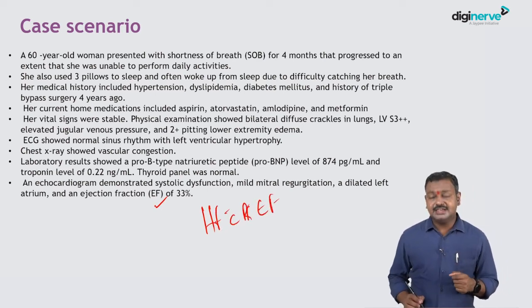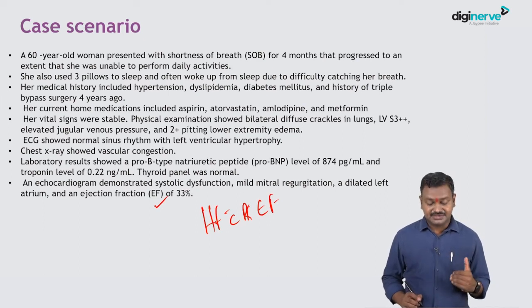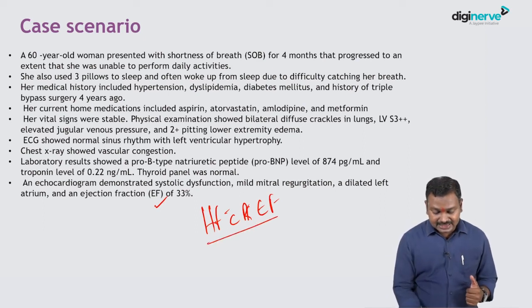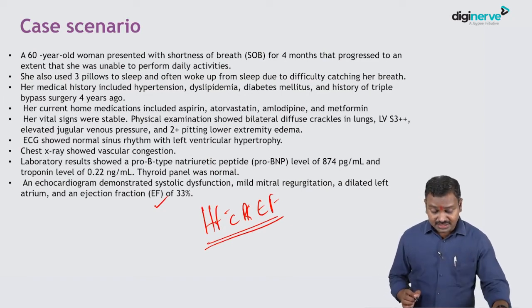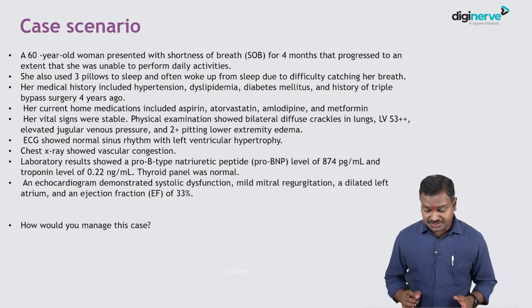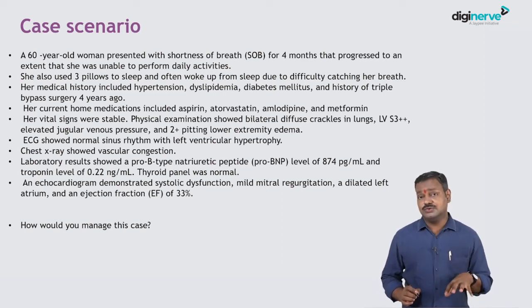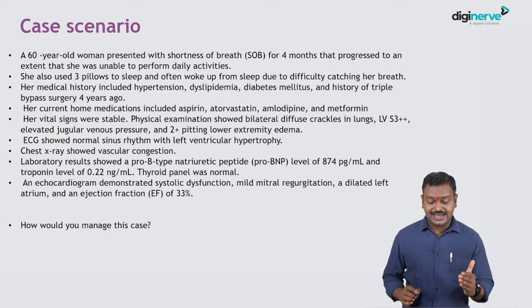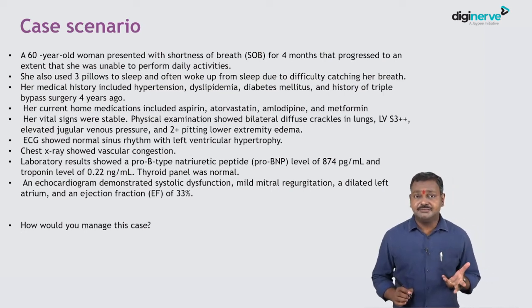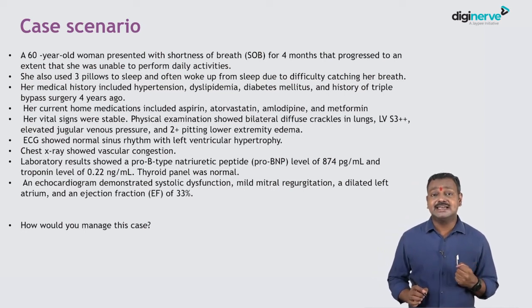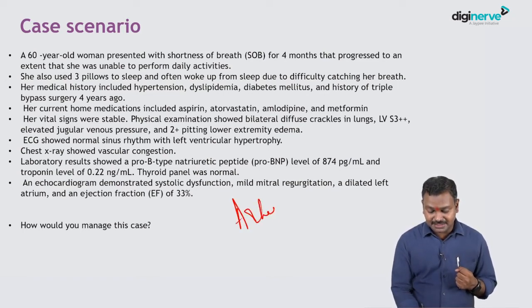When the ejection fraction is less than 40%, we call it heart failure with reduced ejection fraction — that is the diagnosis in our patient. In terms of management, we need to know the comorbidities: diabetes, hypertension, dyslipidemia, and coronary artery disease, now with heart failure. We must also look into precipitating factors. The most common cause for precipitation of heart failure is an arrhythmia.